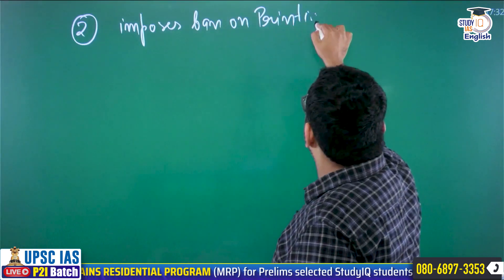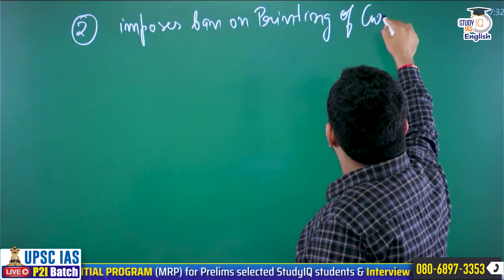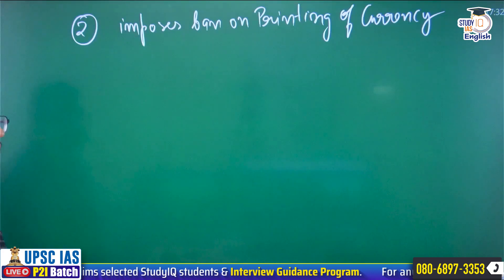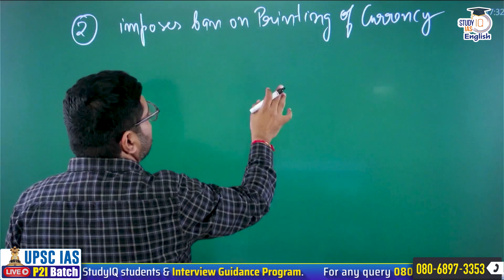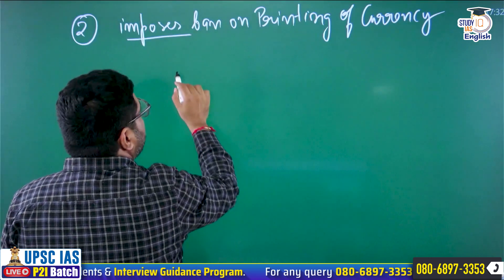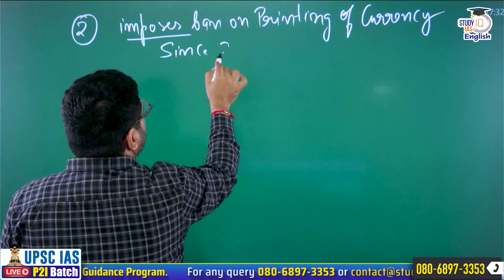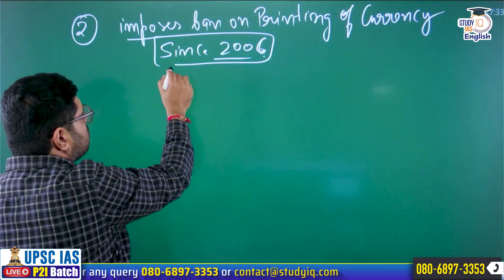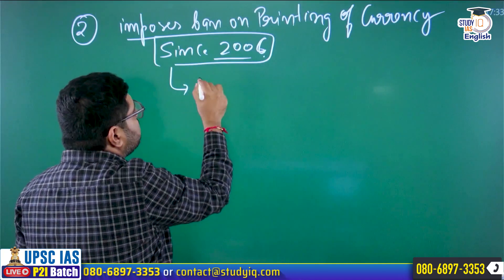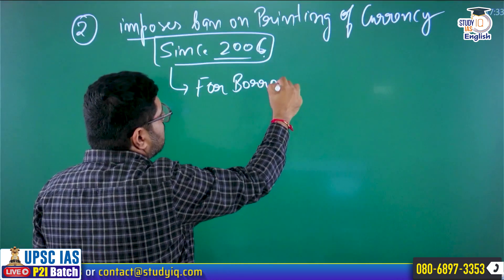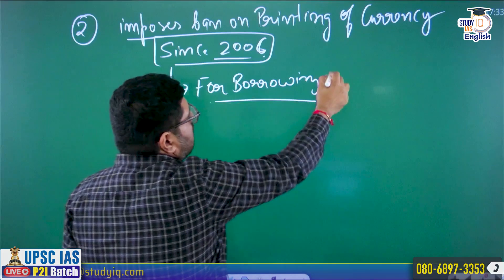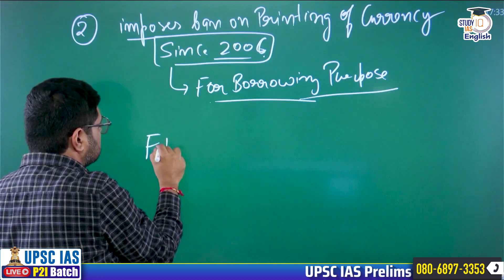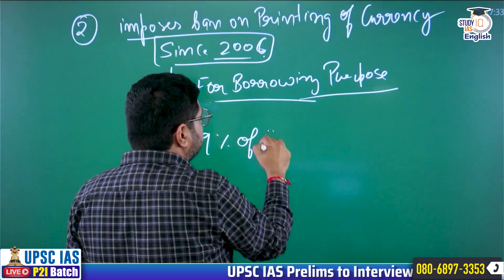Finally, we set a new deadline of 2021, and this time the target was also changed to 4.5% of GDP, to be achieved by 2021. Again, we were not able to achieve it. The reason is the pandemic. Due to the pandemic, our fiscal deficit touched 9% of GDP.